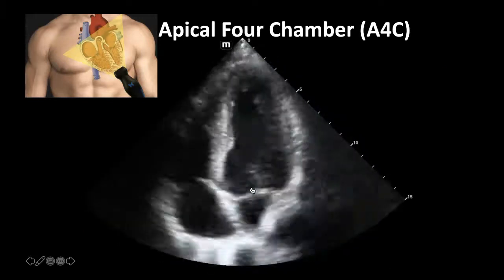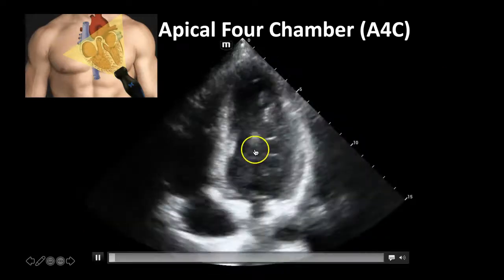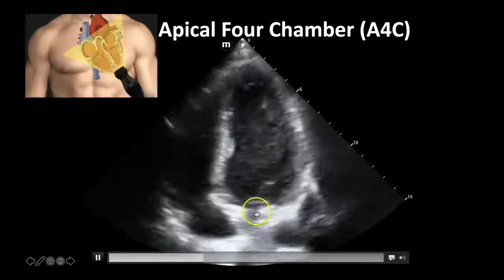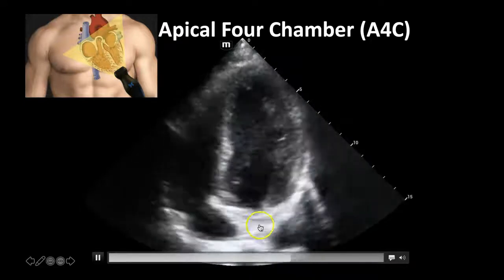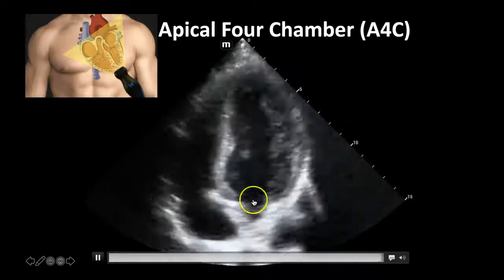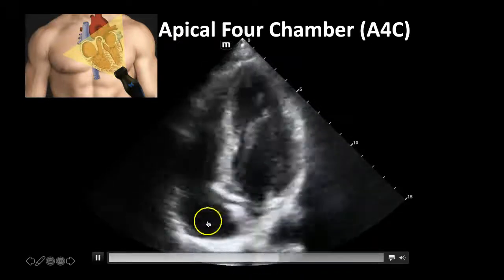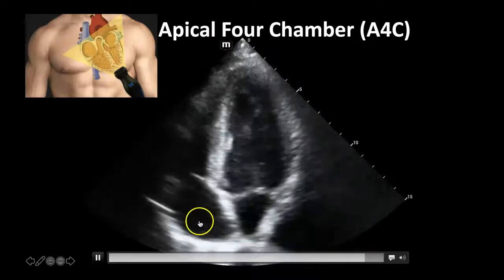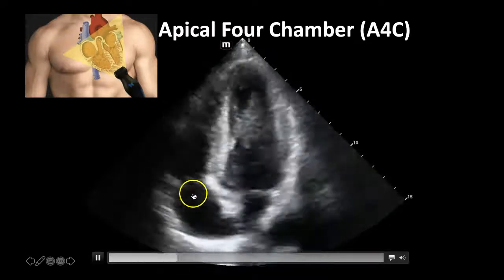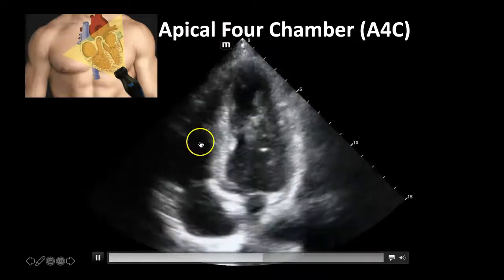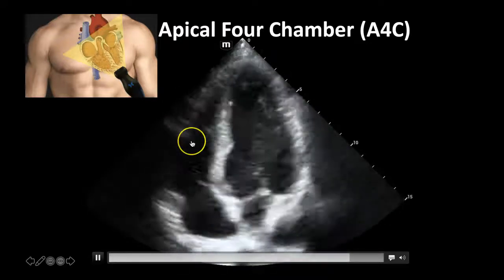Here's a live image of the apical four-chamber view. You've got your left atrium back here, your mitral valve, your left ventricle here, your right atrium here, your tricuspid valve, and right ventricle here.